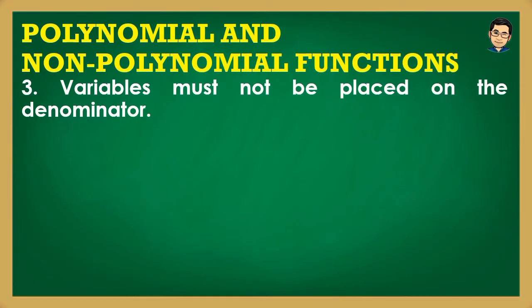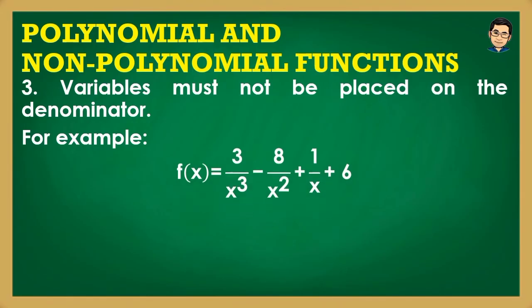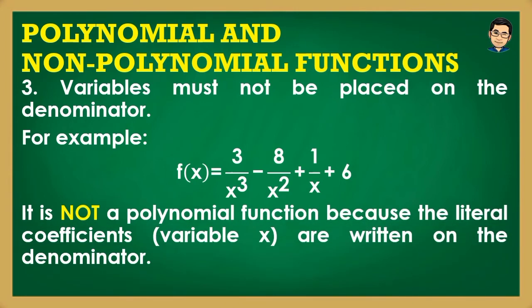Third, variables must not be placed on the denominator. All variables (literal coefficients) must be written in the numerator — hindi sa denominator. For example, f(x) = 3/x³ − 8/x² + 1/x + 6 is NOT a polynomial function because the variable x is written on the denominator. Writing 1/x³ is equivalent to x⁻³, which gives a negative power — making it a non-polynomial function.